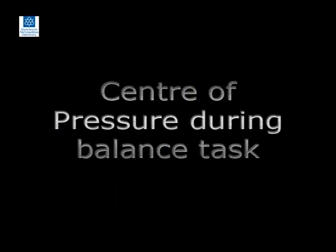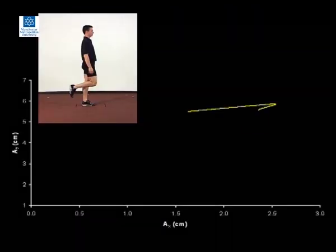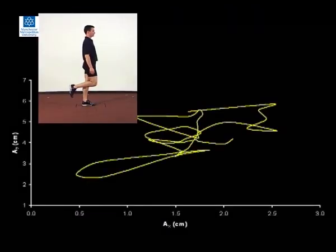The centre of pressure is often used to assess balance. By plotting AY against AX, this graph shows how the centre of pressure shifts on the surface of the plate during a one-legged balance task.